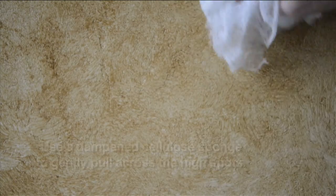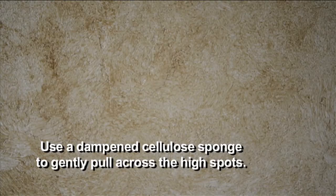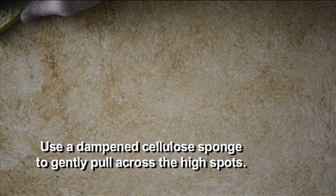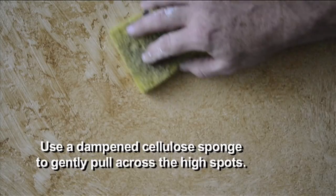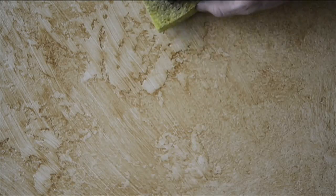So I'll use a dampened cellulose sponge. If you gently pull that across the high spots, it will collect, the glaze will collect in the low areas, leaving more contrast.